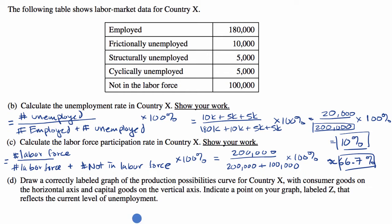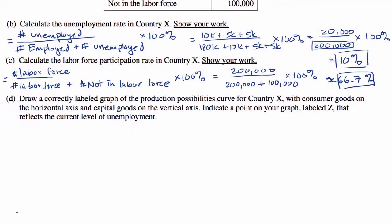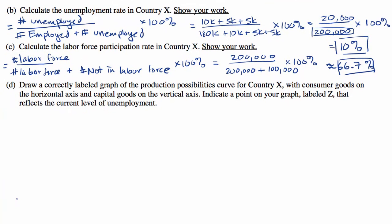Now part D: draw a correctly labeled graph of the production possibilities curve for country X, with consumer goods on the horizontal axis and capital goods on the vertical axis. Indicate a point on your graph, labeled Z, that reflects the current level of unemployment. Pause your video and see if you can do that. Now let's do that together — I'll scroll down a little bit so I have space.